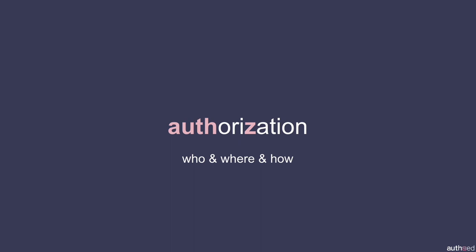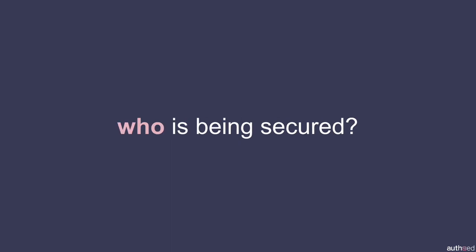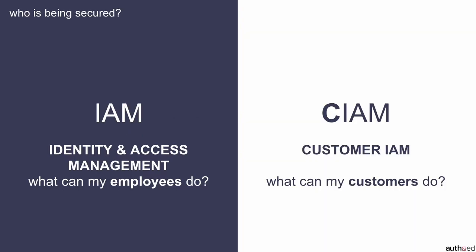The way I like to categorize authorization is to split it into three different categories: the who, the where, and the how. We'll start with who — the question of who is being secured. Now, there are two buzzwords that are quite confusing, and as I said earlier, the terminology comes from the identity space. You're going to have to relinquish any previous knowledge about these terms, because I'm going to use them purely from the perspective of evaluating the authorization ecosystem.